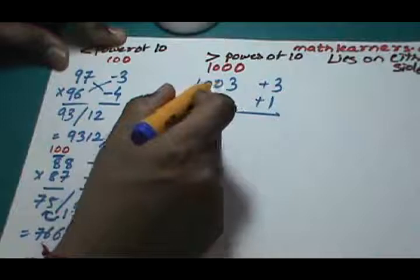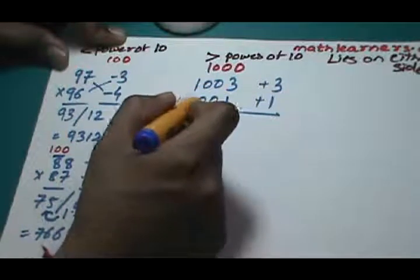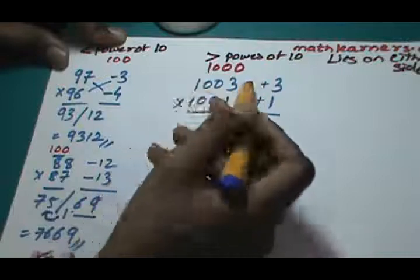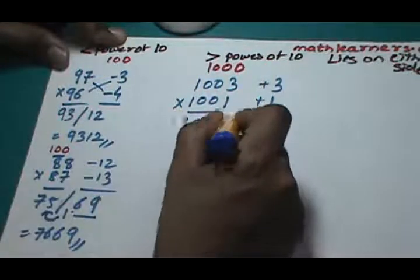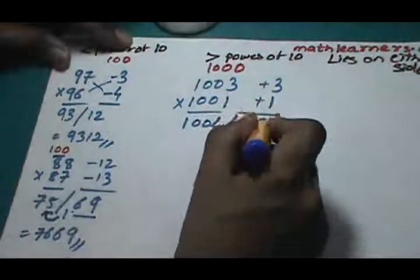Cross addition of 1003 plus 1, or cross addition of 1001 plus 3, will give 1004 slash. 3 multiplied by 1 gives us 3.